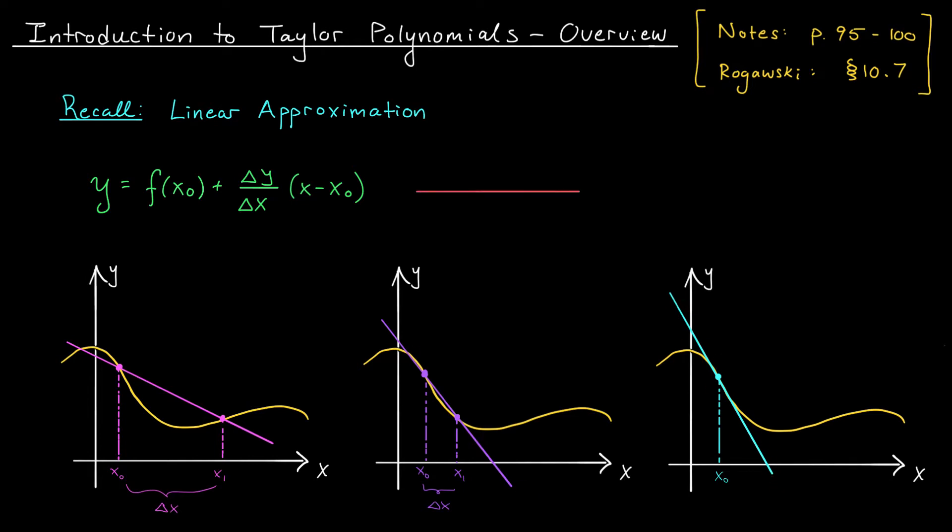As for our equation, well, when Δx goes to 0, this slope term here, Δy over Δx, is going to turn into our derivative. So here we get y equals f(x_0) plus f'(x_0) times (x - x_0). And there you have it. The linear approximation is born.